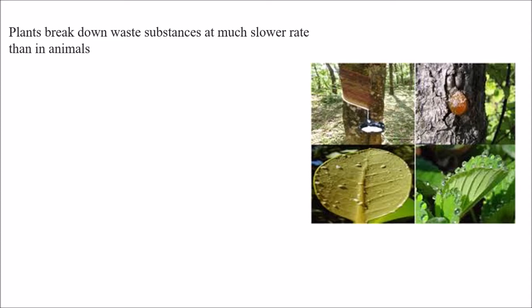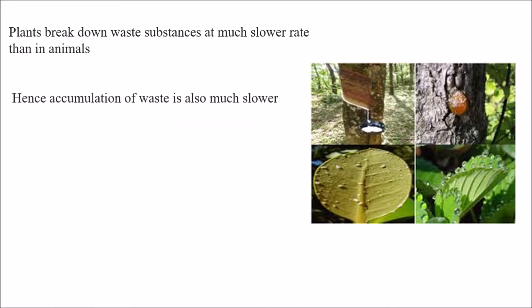So what does the plant do? Plants break down waste substances at a much slower rate than in animals. If you compare the breakdown of waste materials in plants to animals, it happens at a very slow rate. Hence, accumulation of waste is also much slower. In animals, the breakdown of substances is faster and accumulation is also faster, whereas in plants the breakdown of waste materials and the rate of reaction is slower.